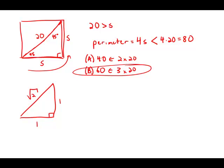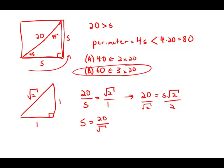So I'm going to set up a proportion: 20 over s equals square root of 2 over 1. Cross multiply, and that gives me 20 equals s times the square root of 2. Divide both sides by the square root of 2, I get s equals 20 over the square root of 2.